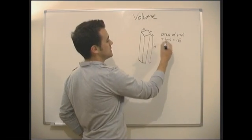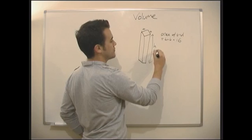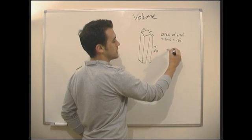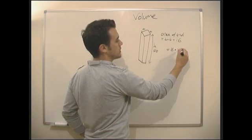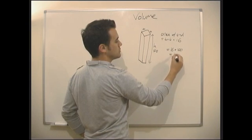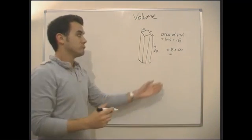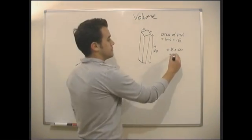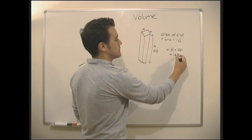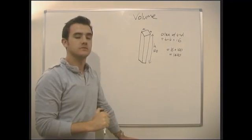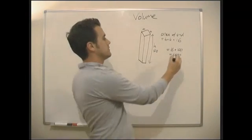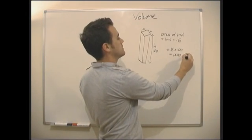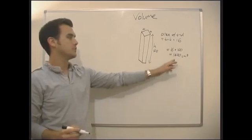Times by the height. In this case, I don't know, I'm going to call it 100. So, we're going to get 16 times 100 equals 1,600 centimeters cubed. Let's get a few different types of prism.